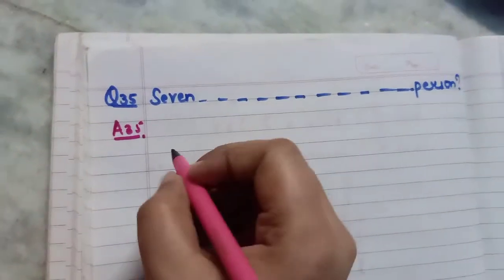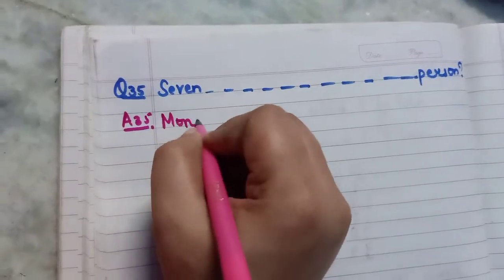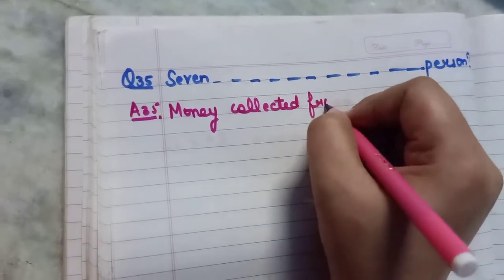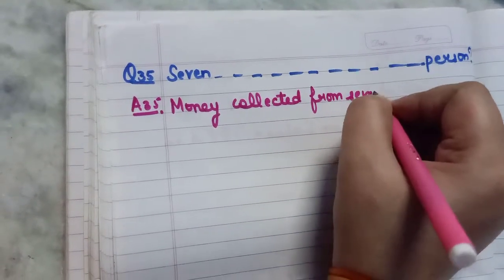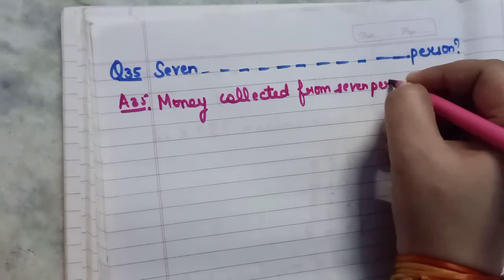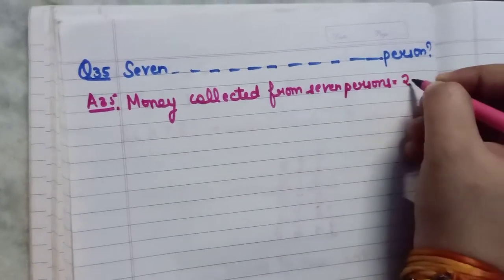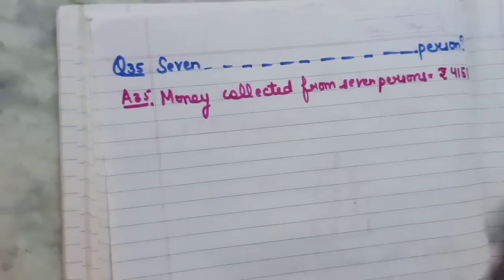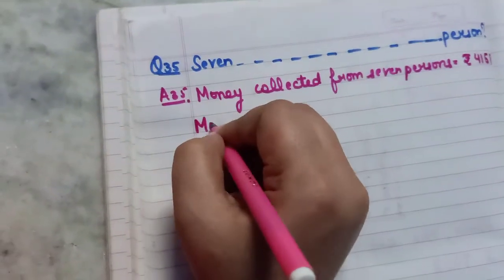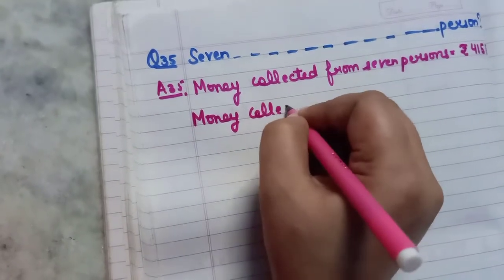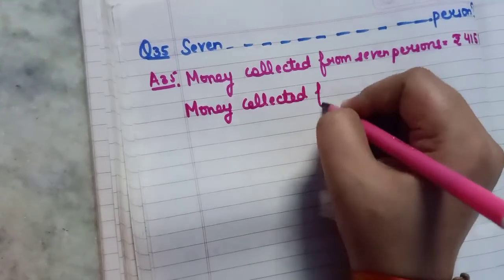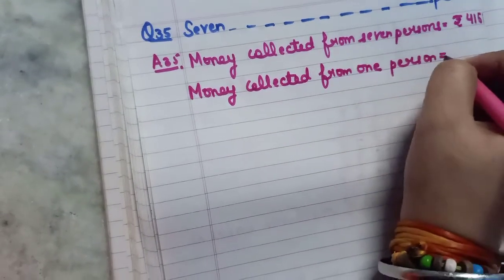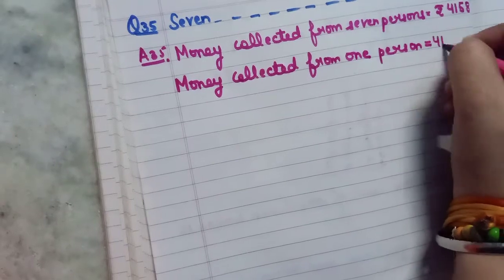So you can write here money collected from 7 persons. This information has been given to us in the question only, that is equal to 4158. So what we have to calculate or find out? Money collected from 1 person. So we have to calculate for 1 person.